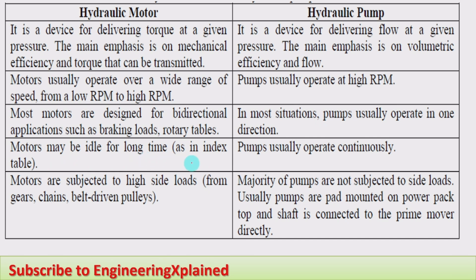Motors may be idle for long periods of time. Based on direction control, if fluid is not supplied to the motor it will remain idle, while other actuators may be operated at a given time. Pumps usually operate continuously, because the pump supplies fluid to the system continuously, and the actuation depends on variation through the direction control.